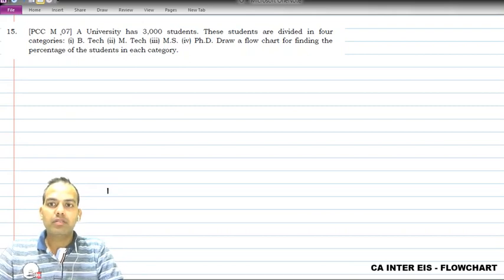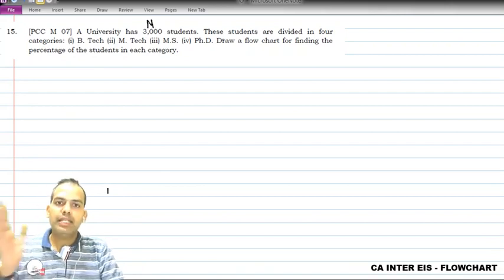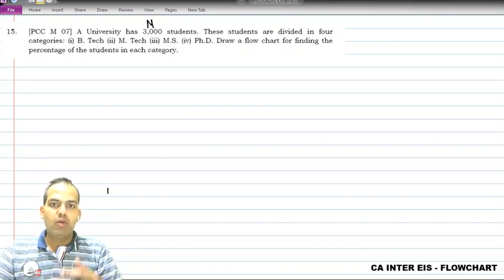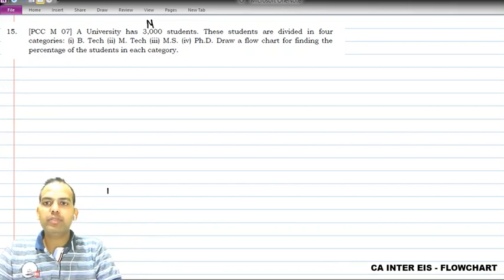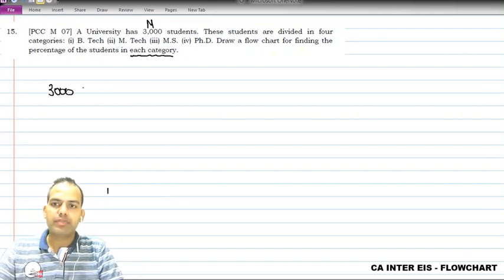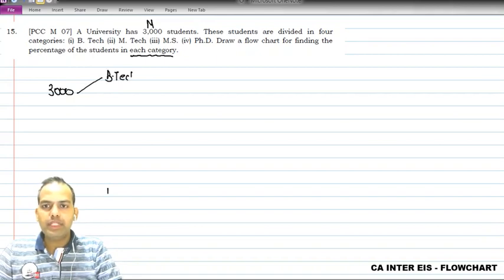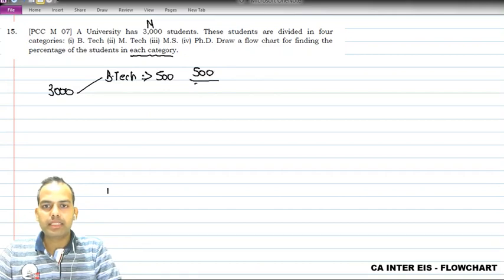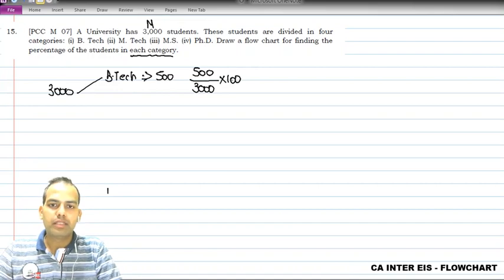The university has three thousand students, and these students are divided into four categories: B.Tech, M.Tech, MS, or PhD. We need to draw a flowchart to find the percentage of students in each category. For example, if 500 students have taken B.Tech, the percentage is 500 divided by 3000 multiplied by 100.